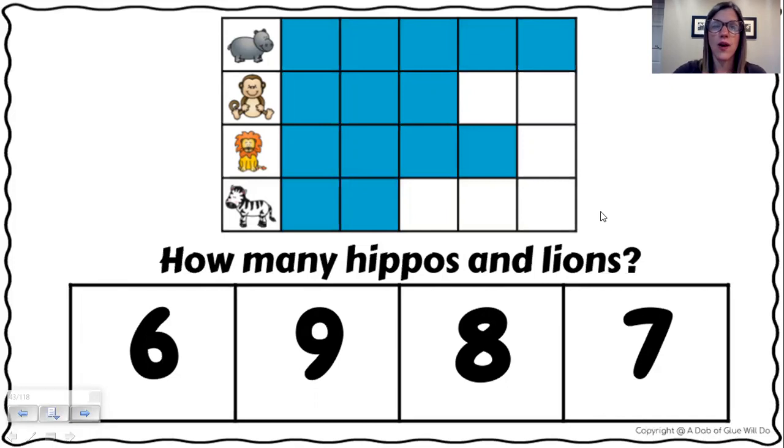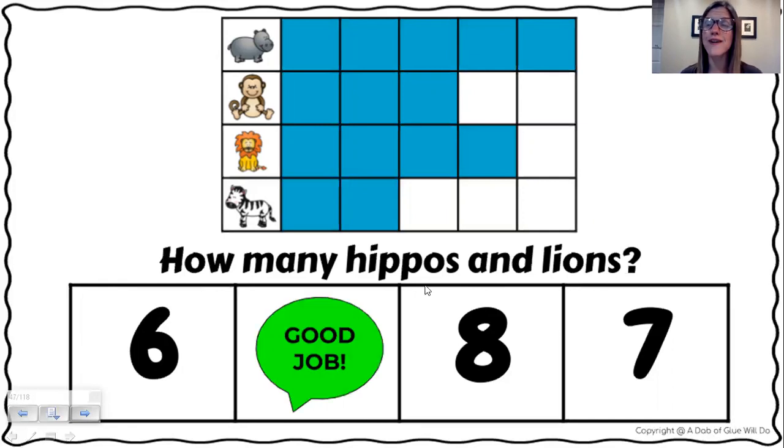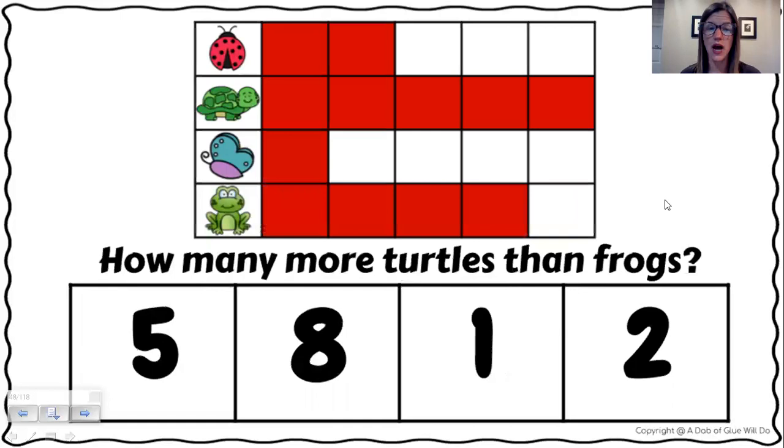There are five hippos and there are four lions. So we're going to start at five and we're going to count on four. Five, six, seven, eight, nine. How many hippos and lions are there? There are nine. Good job.